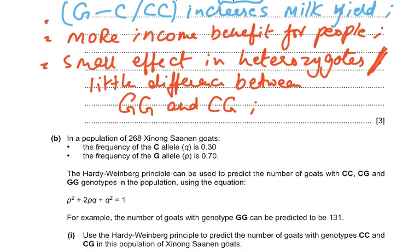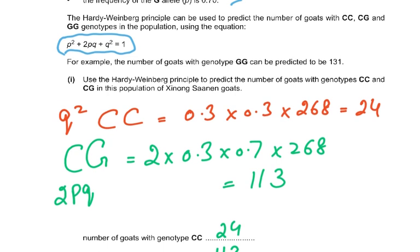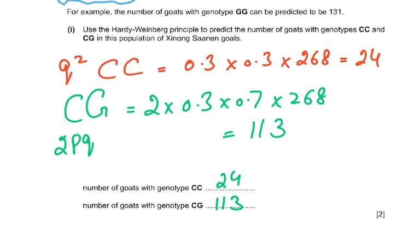Part B is about Hardy-Weinberg — either you know it or you don't. In a population of 268, the frequency of the C allele (q) is 0.30 and p is 0.70. You use the Hardy-Weinberg formula. If you have problems with Hardy-Weinberg, you need to figure that out separately; otherwise, just leave these two marks.